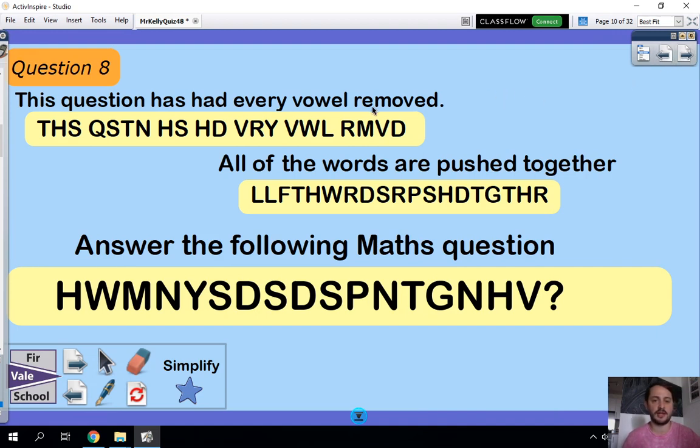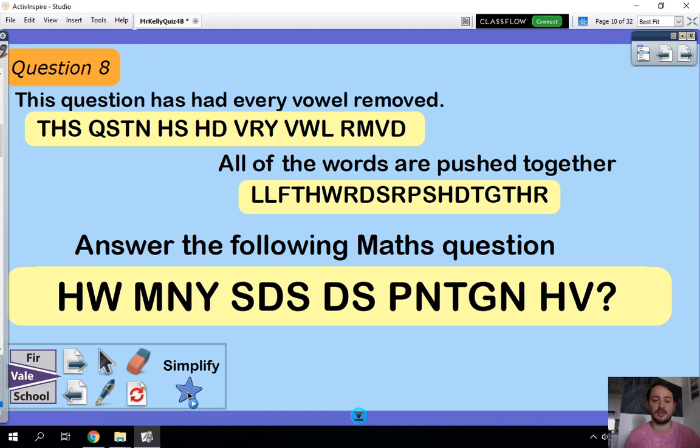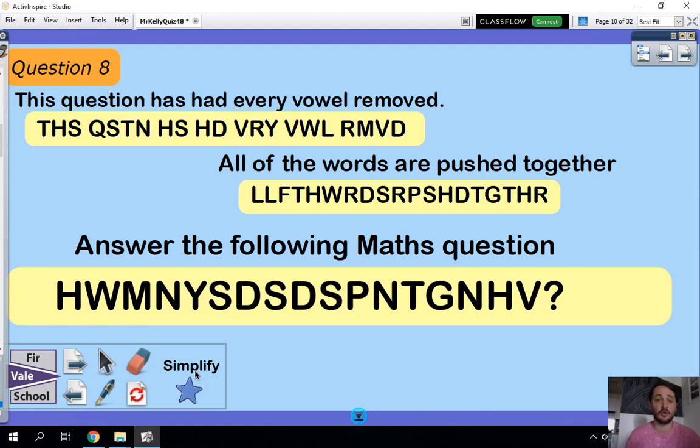So question eight. It says this question has had every vowel removed. Obviously vowels are A, E, I, O and U. Then it's had all of the words pushed together. Answer the following maths question. So you don't need to tell me what this question is. You need to answer this question. So we've got some letters here. I might very quickly show you this simplified. I might separate them to make it a little bit easier. I'll very quickly show you this and I'm going to put it back. So if you're quick at pausing, you might be able to do this. So there's no vowels. There's no spaces. This is it though with some spaces. So you need to answer the question. Not tell me what the question is, but you need to give me the answer to that.